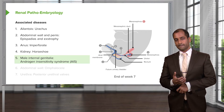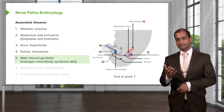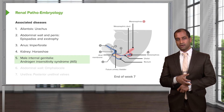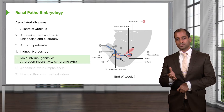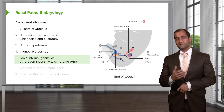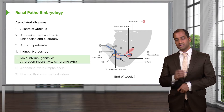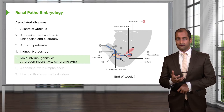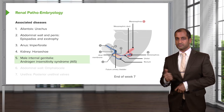If your androgen is not properly working on the receptor, then how are you able to develop any of the proper male sexual structures? You cannot. This is the patient who, phenotypically, looks like a perfect phenotypic female. Upon pelvic examination, there is a vagina, but it ends up in a blind pouch because there isn't a uterus. There are no ovaries. Androgen insensitivity syndrome.